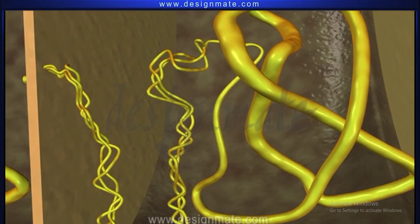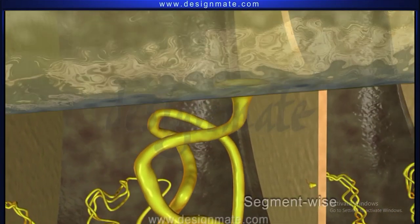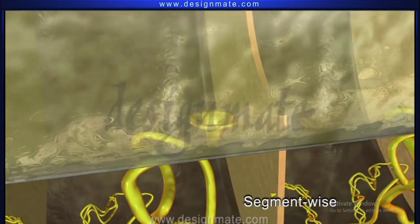They possess coiled tubular nephridia for excretion. These are arranged segment-wise and open into the intestine.